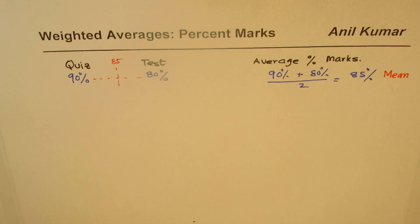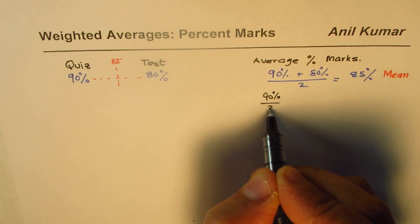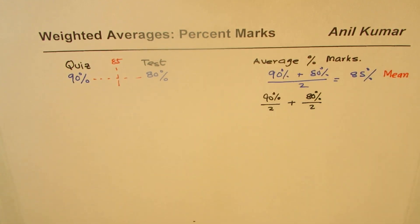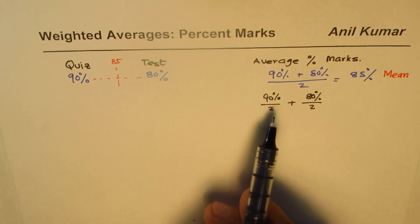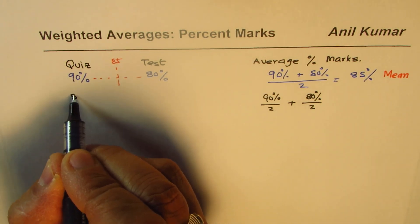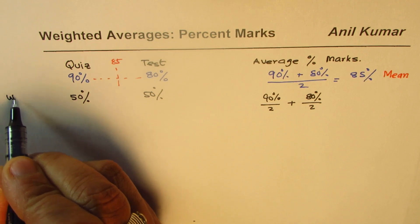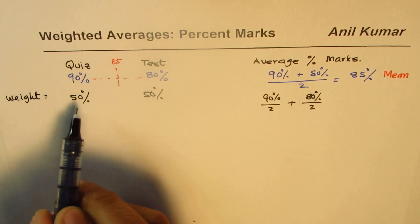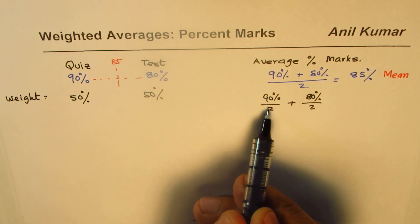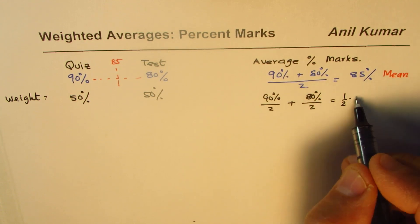What we have done here is divided 90 percent by 2 and added 80 percent divided by 2 — a common denominator. In this particular case, we are saying that each has the same weight — we can say 50 percent weight each. So the importance of quiz is 50 percent and that of test is also 50 percent. We take half times 90 percent plus half times 80 percent.